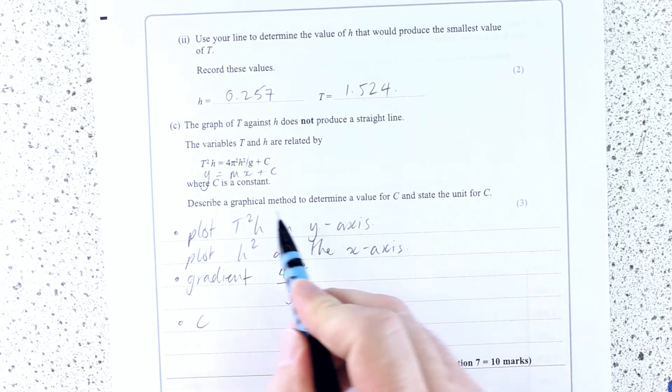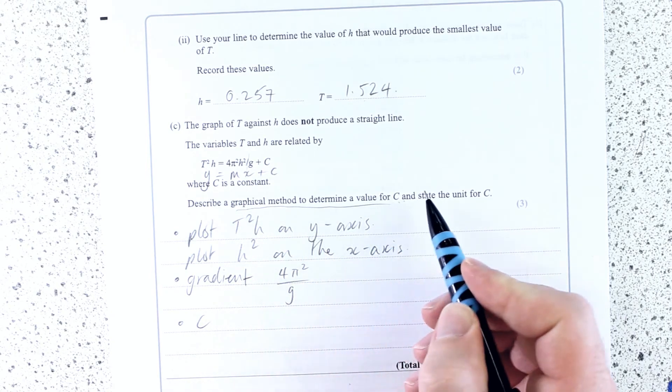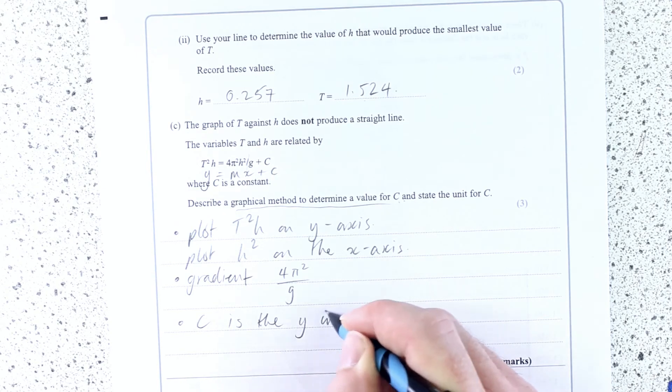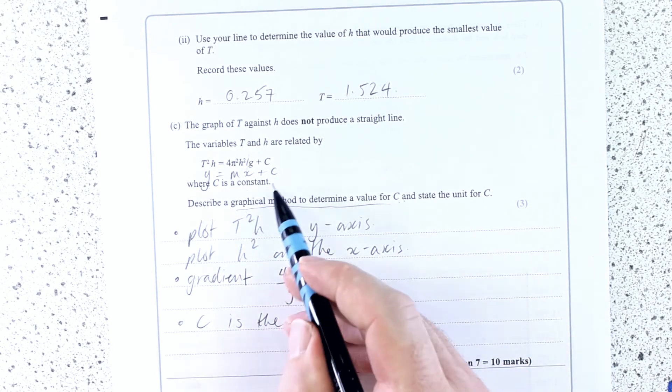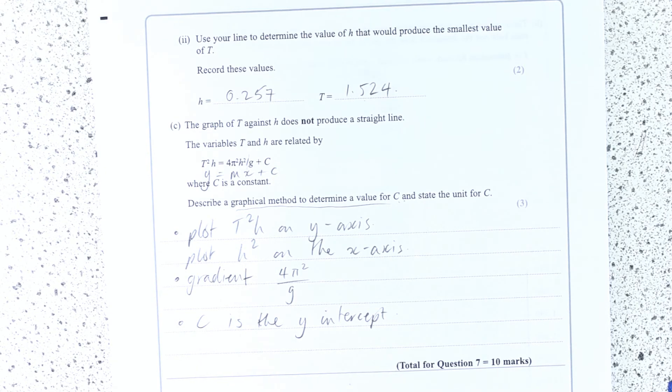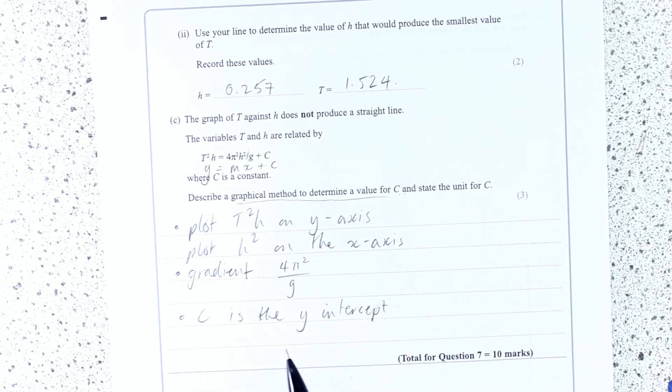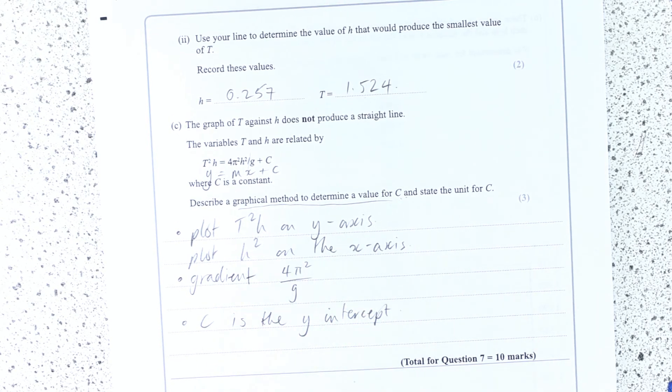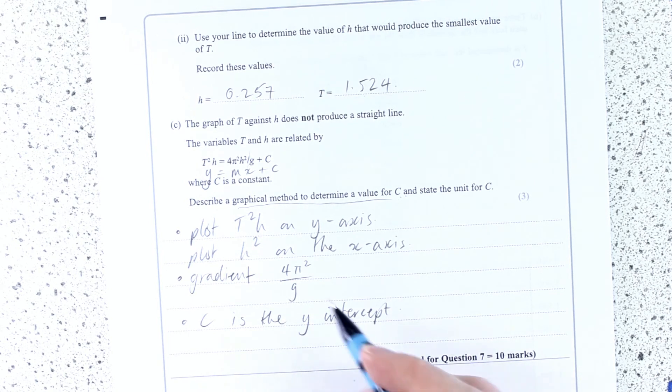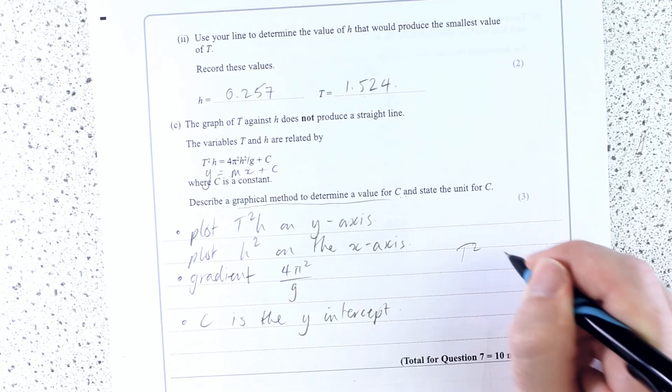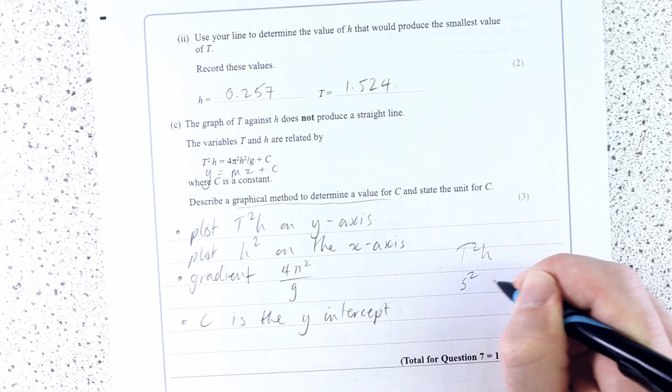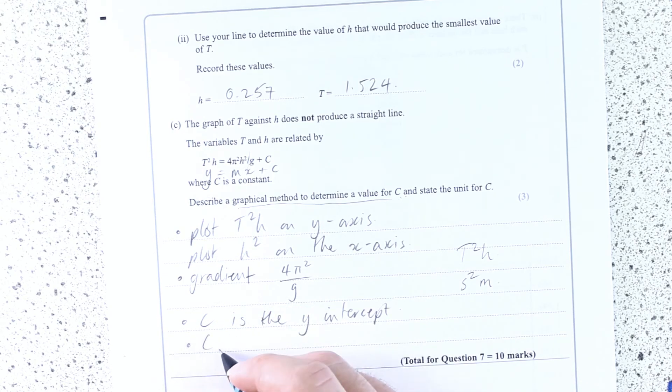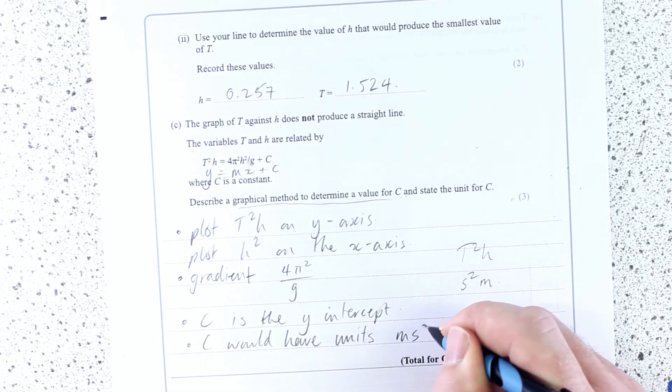C is the, they want the graphical method to determine the value of c. C is the y-intercept. Very nice of them to use the same term there, just to really make it obvious for us. Now what is the y-intercept going to be? Well, it's going to have the same units as the y-axis because it's a y-intercept. So it has to, doesn't it? Well, the y-axis would have units seconds squared meters. Okay, so I could put that in there. C would have units meters seconds squared.